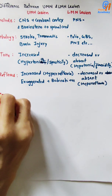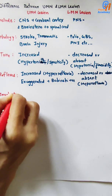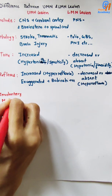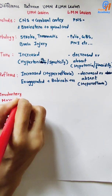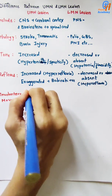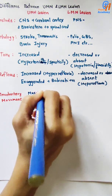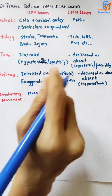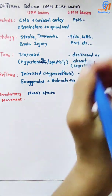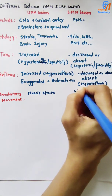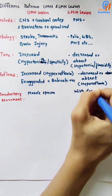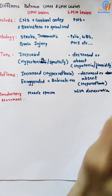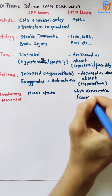Regarding involuntary movement: in UMN lesion, muscle spasm is seen. In LMN lesion, because of denervation, fasciculation is seen.